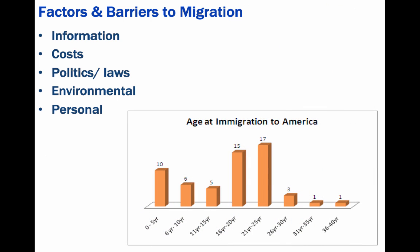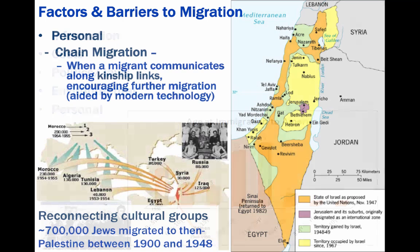For example, well-educated, affluent, young males are the most mobile in the world, and poorly educated females who are old and poor are the least mobile. Of course, money is the most important factor affecting migration.